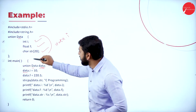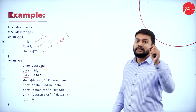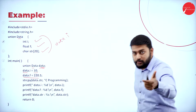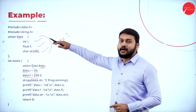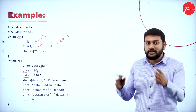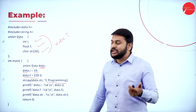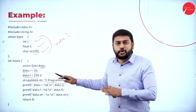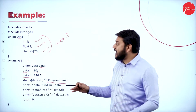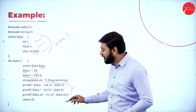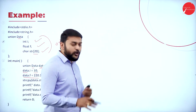Observe the code: I'm accessing 'data.i' and initializing it to 10. Similarly, I'm accessing 'data.f' and setting it to 220.5. I'm also copying content into 'data.str'. I'm using the dot operator to access the different data items inside the union and initialize them. After that, I'm printing the values and closing the program. This is how the union concept works.